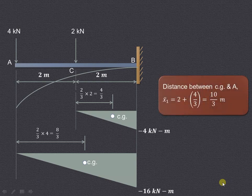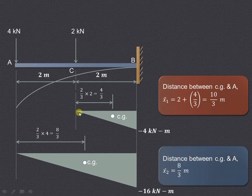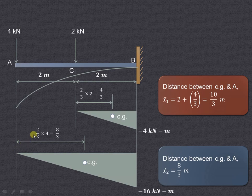Now we calculate the distance between each centroid (CG) and point A. For the first triangle, the CG is 2 meters plus 4/3, giving a total distance x̄1 = (3×2 + 4)/3 = 10/3 meters. For the second triangle, the distance between the CG and point A is (2/3) × 4 = 8/3 meters. Now we know all the required values.